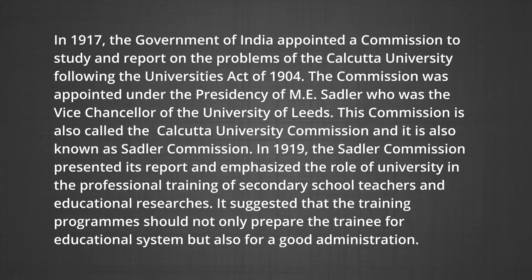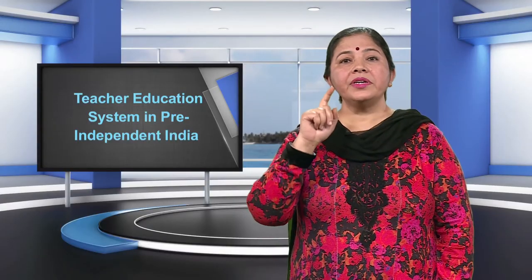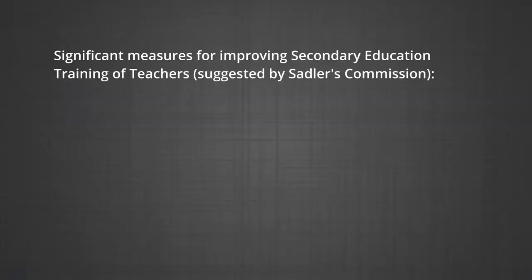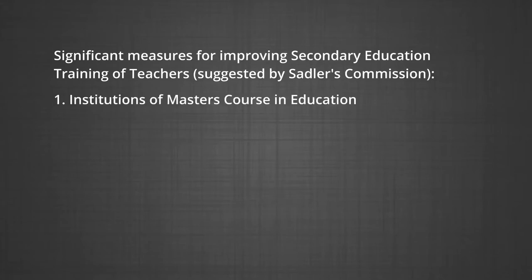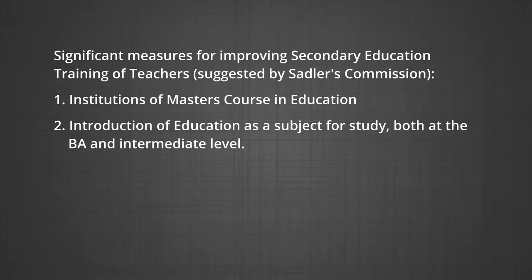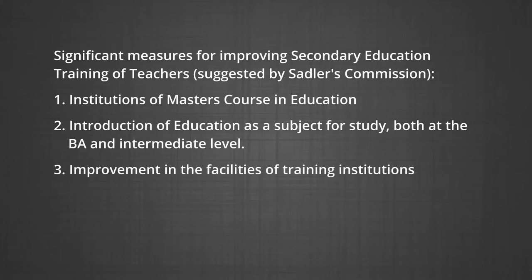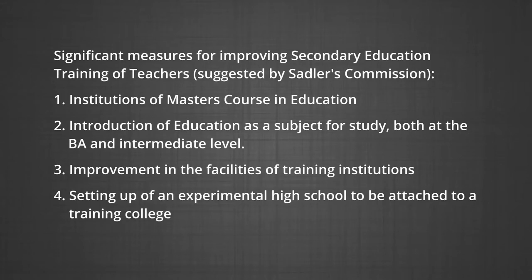In 1919, the Sadler Commission presented its report, emphasizing the role of the university in the professional training of secondary school teachers and educational researchers. It suggested that training programs should not only prepare teachers for the educational system but also prepare good administrators. It proposed four significant measures: institution of a master's course in education; introduction of education as a subject at the B.A. and intermediate level; improvement in facilities of training institutions; and setting up of an experimental high school attached to a training college.